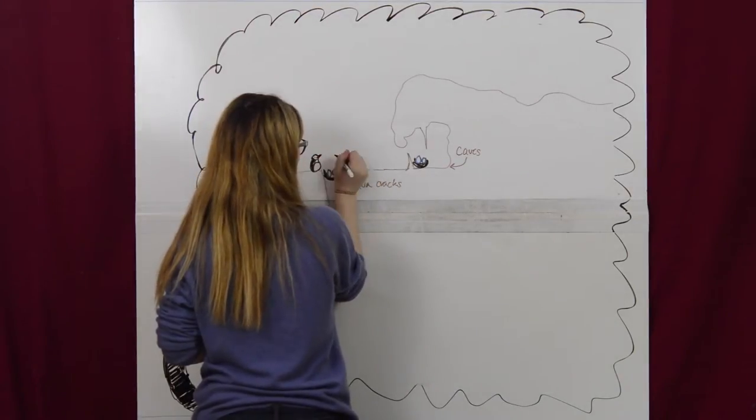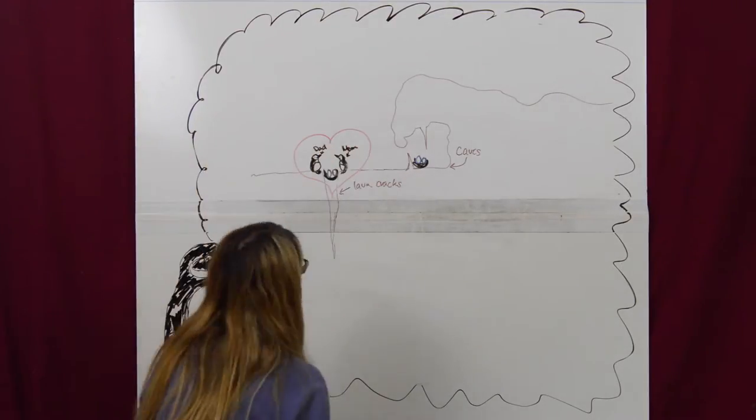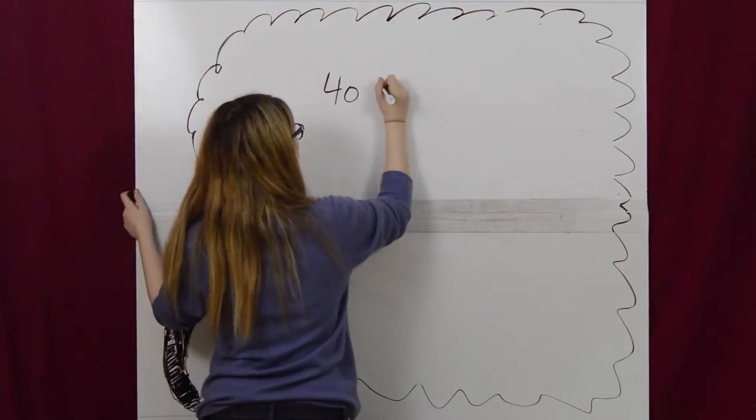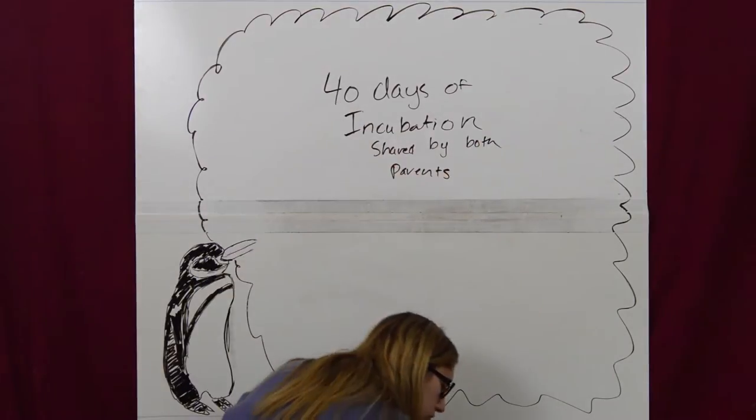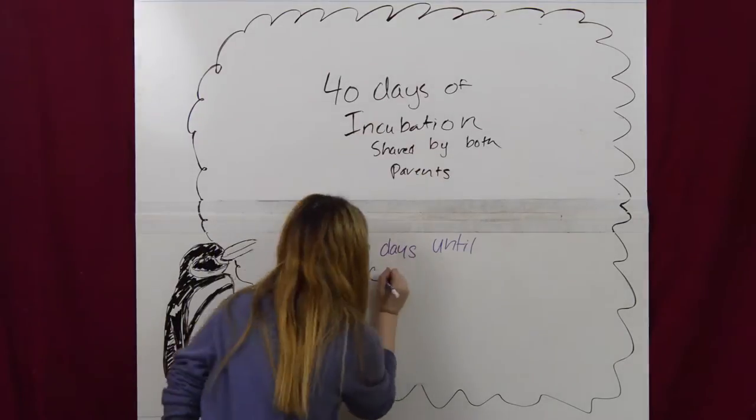Two eggs can be produced at an interval of around four days. Incubation takes up to 40 days and is shared by the male and female. The chicks fledge after 65 days and are fully independent within three to six months.